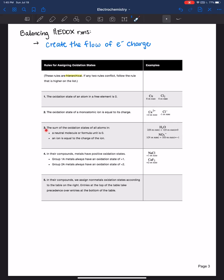Number three is really important. The sum of the oxidation states of all atoms in a neutral molecule or formula unit is zero. For example, all the oxidation states in water must add up to zero. Hydrogen will be plus one, so two times plus one is two. Oxygen is negative two, so plus two minus two is zero.